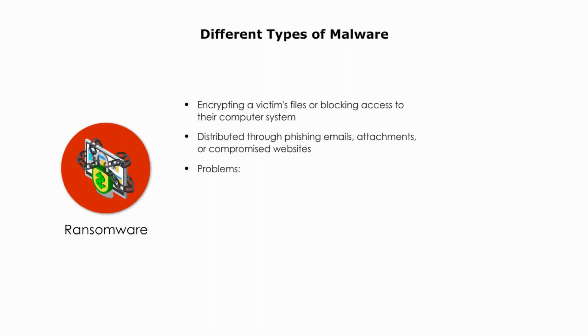Once the malware infects a system, it will encrypt the victim's files, making them inaccessible. The victim will then receive a ransom note that explains the situation and demands payment in exchange for the decryption key that will allow them to regain access to their files or system. The ransom is usually demanded in cryptocurrency like Bitcoin, which makes it difficult to trace the perpetrator.